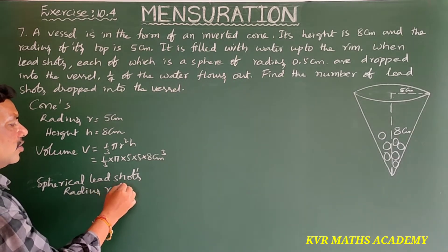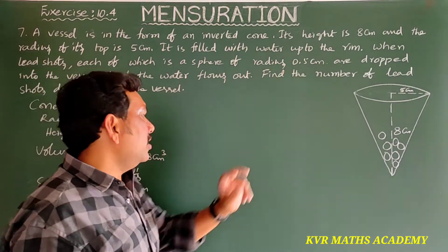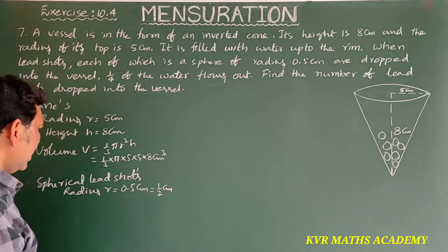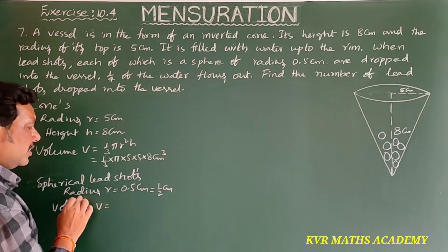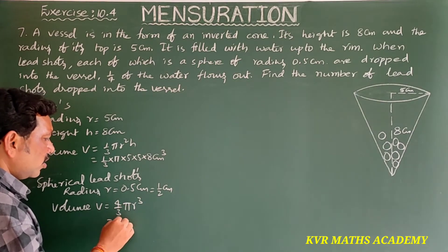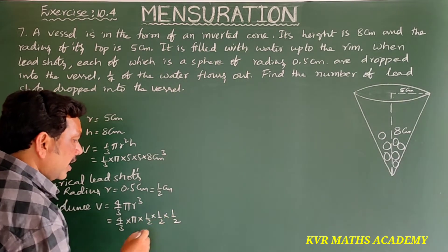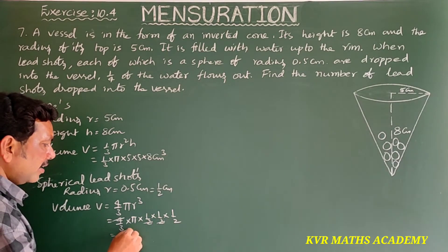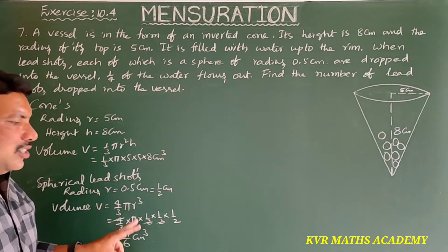Radius r is equal to 0.5 centimeters, which is also 1/2 centimeter. Its volume v is equal to 4/3 × π × r³, that is equal to 4/3 × π × (1/2)³. Here 4 gets cancelled, giving π/6 centimeter cube. This is the volume of the spherical lead shot.